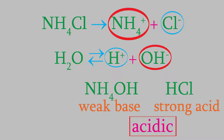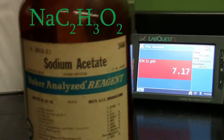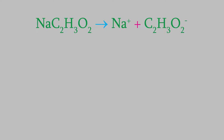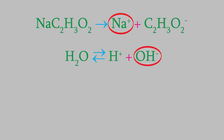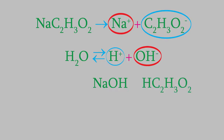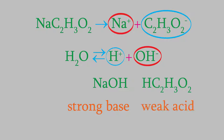On the other hand, let's think about the other solution we looked at — sodium acetate. This dissolves to give us sodium ions and acetate ions. The sodium has a positive charge, so it's attracted to the hydroxide ions. And the acetate has a negative charge, so it's attracted to the hydrogen ions. As a result, we get small amounts of sodium hydroxide and acetic acid. The sodium hydroxide is a strong base, and acetic acid is a weak acid. So overall, we get a basic solution when we dissolve sodium acetate.